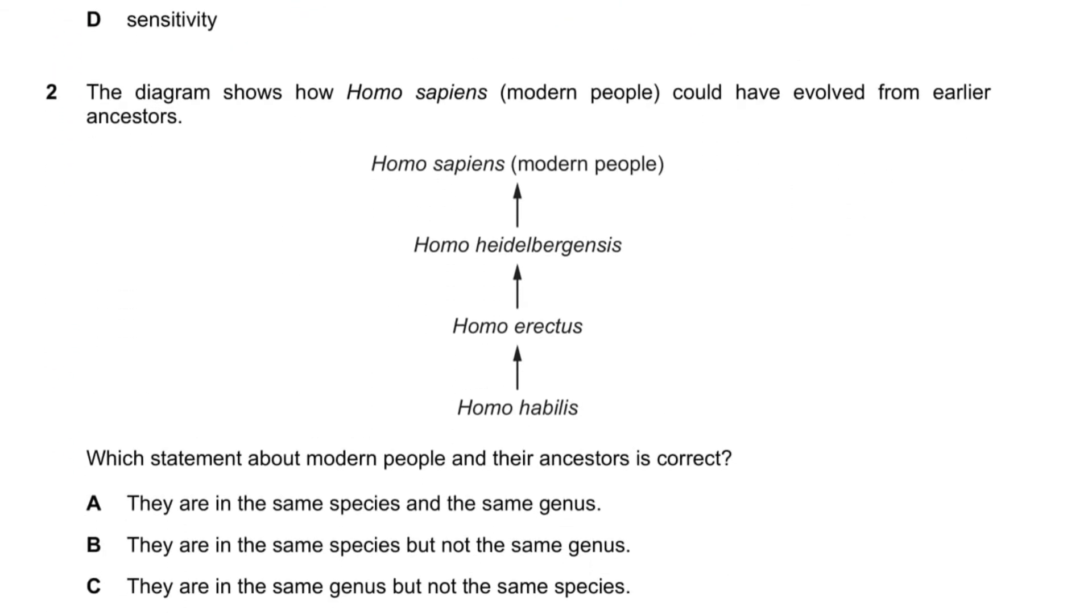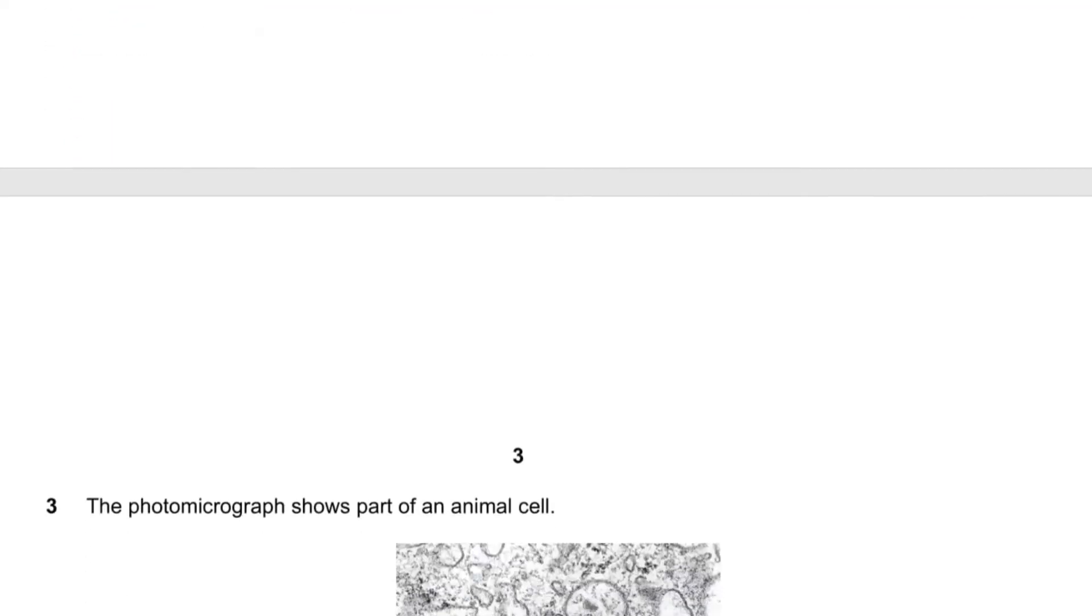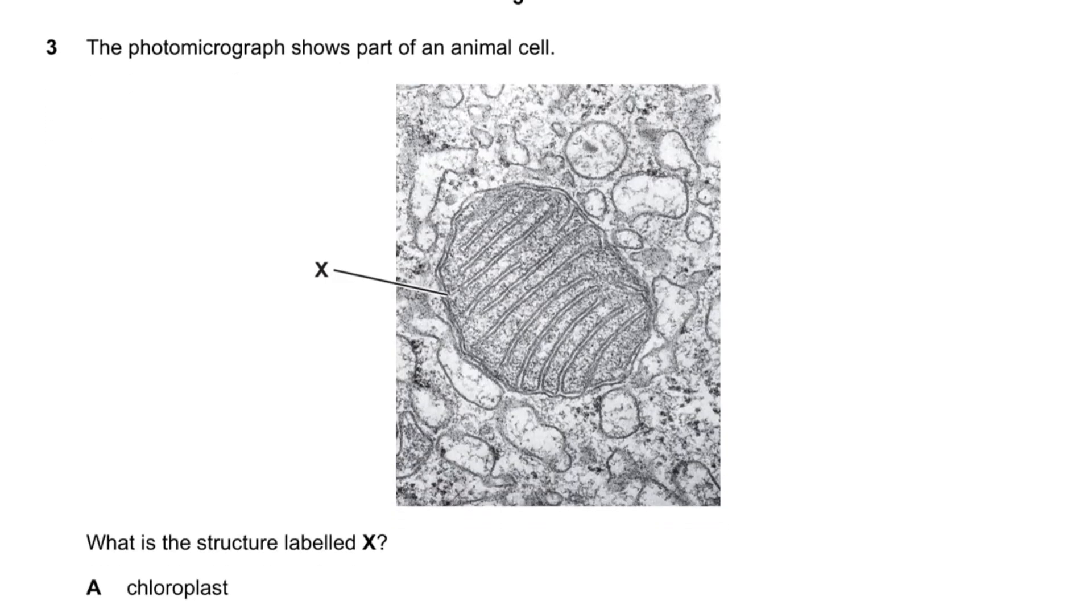Question number two says the diagram shows how Homo sapiens could have evolved from earlier ancestors. Which statement about modern people and their ancestors is correct? Binomial system is basically a genus name with a capital letter and then a small species. So if we look at the statements, they all have the same first name, which is the same genus, and then different species because these second names are different. Same species but not the same genus, but not the same species. They do have the same genus, so it's not D.